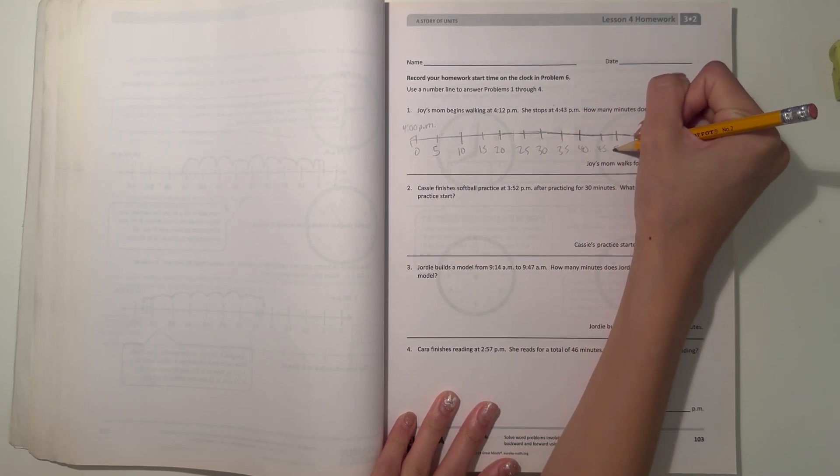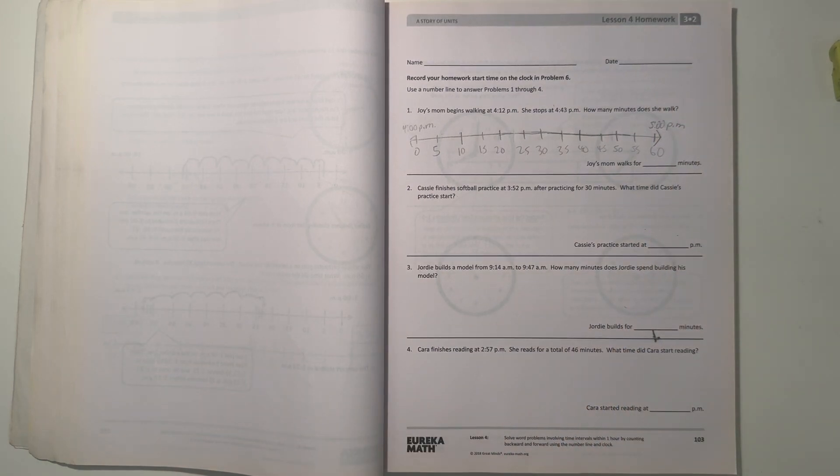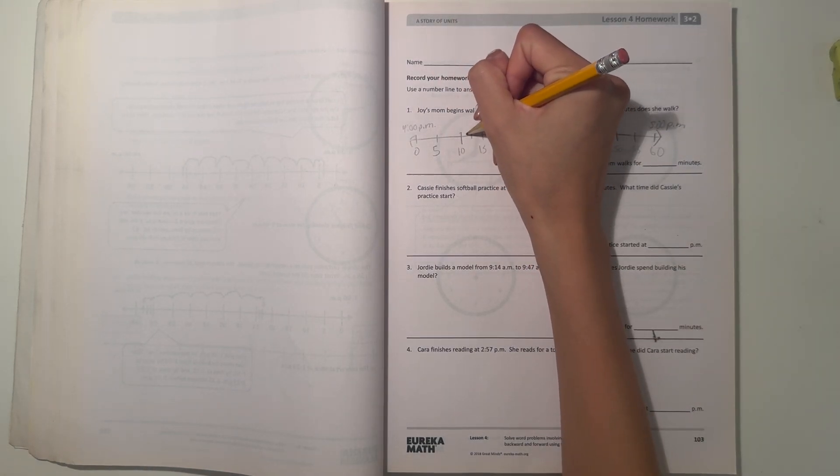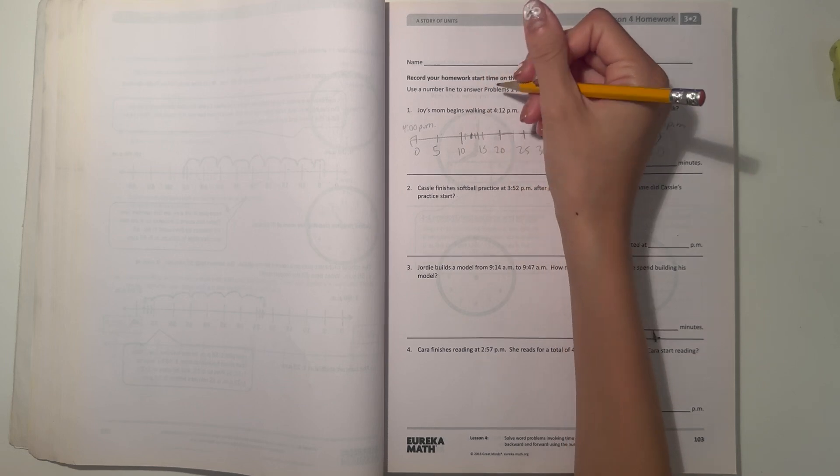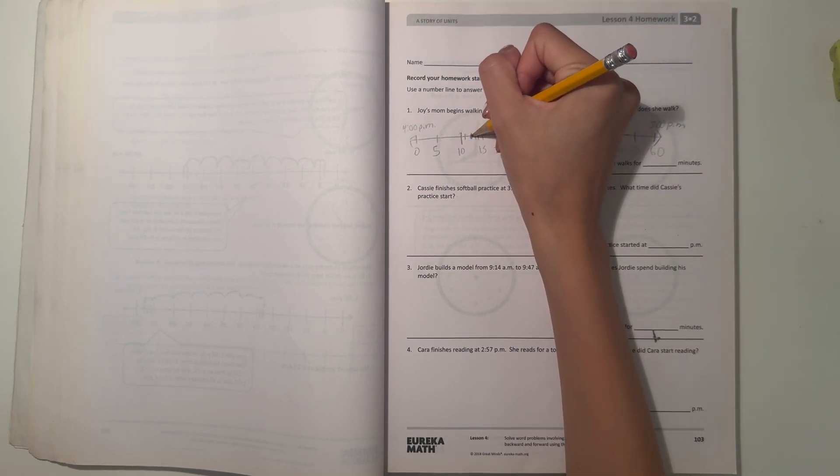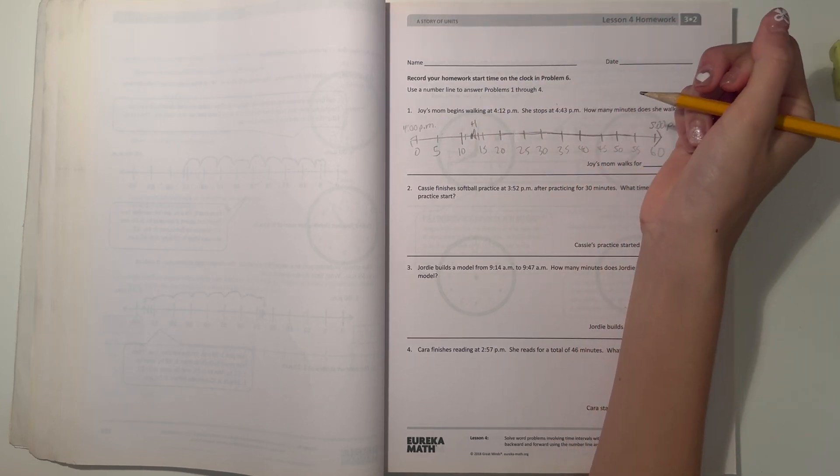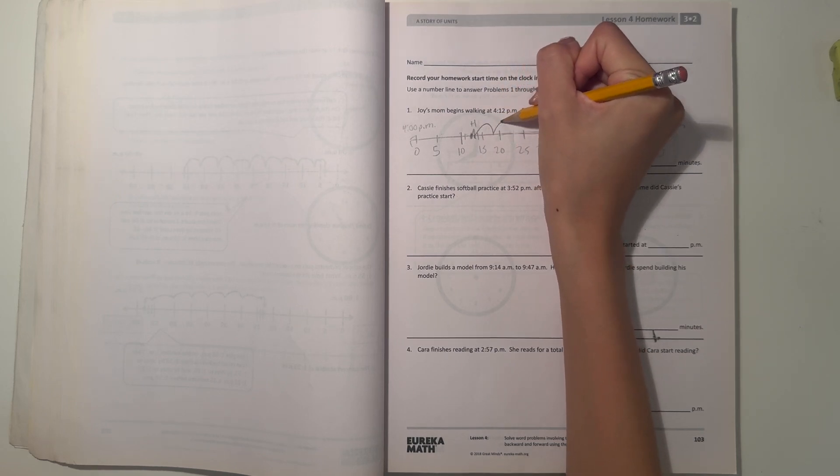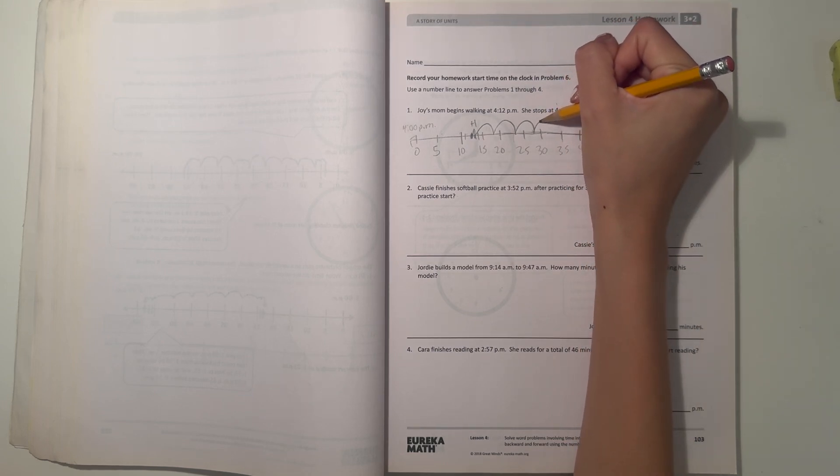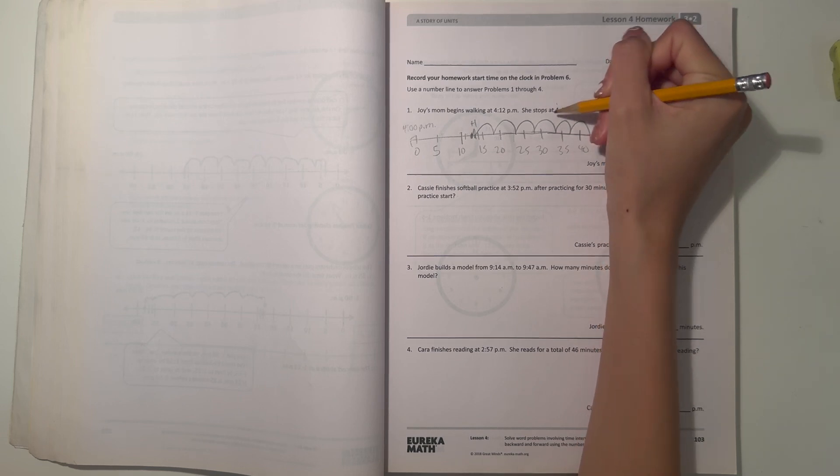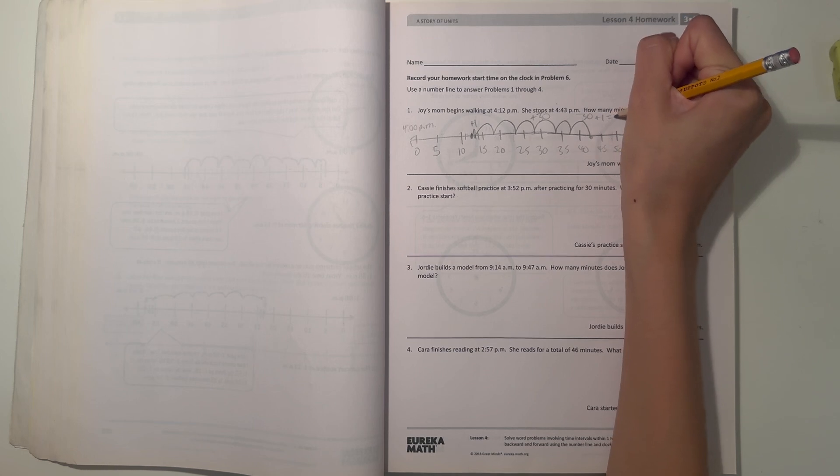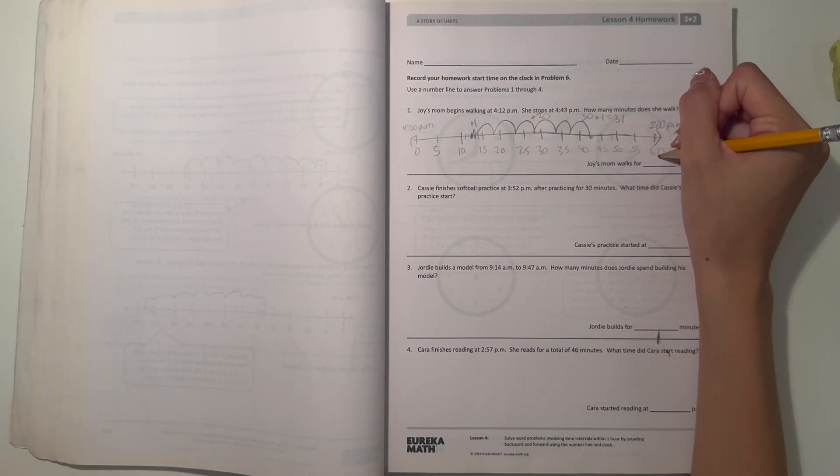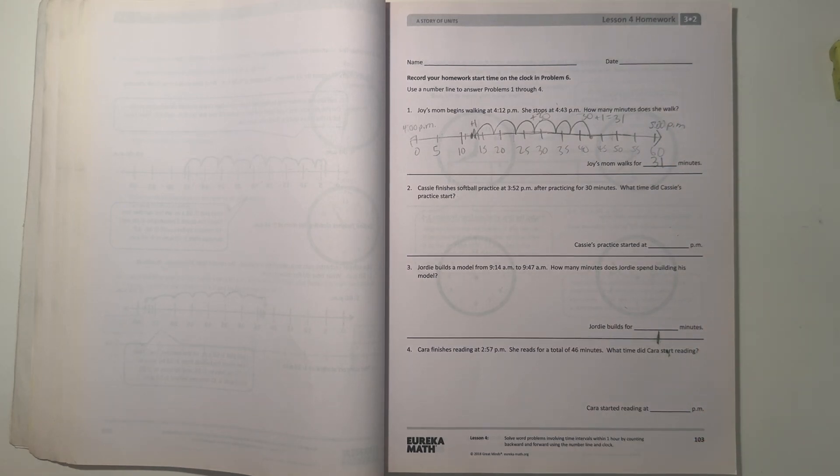Joy's mom begins walking at 4:12, so that's over here. This is when she starts walking and then she stops at 4:43. Let's first get to 4:40. So 15, 15, 15, 20, 25, 30. That's 30 minutes and we land at 4:43. So 30 plus 1 is 31. Joy's mom walks for 31 minutes, and 12 plus 31 is also 43, so that makes sense.